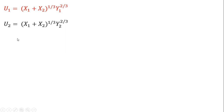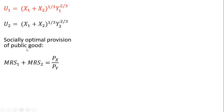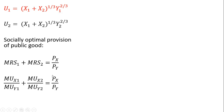Rewriting each consumer's utility function, we're now going to find the socially optimal provision of the public good. That is given by the condition where the marginal rate of substitution for person 1 added to the marginal rate of substitution for person 2 equals the price of the public good divided by the price of the private good. In terms of marginal utility, the MRS for consumer 1 is the marginal utility of the public good divided by the marginal utility of the private good, and similarly defined for person 2.